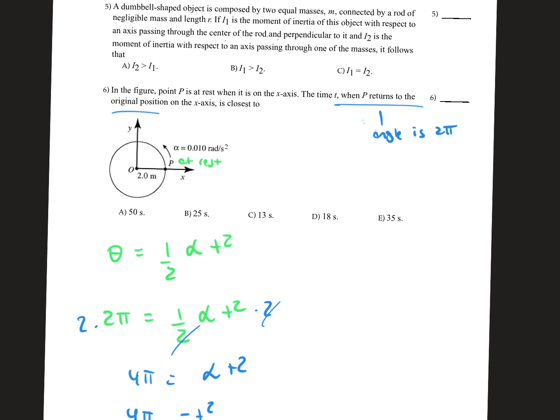In problem number 6 it says, in the figure point P is at rest when it is on the x-axis. Now the time t when P returns to the original position on the x-axis is closest to...